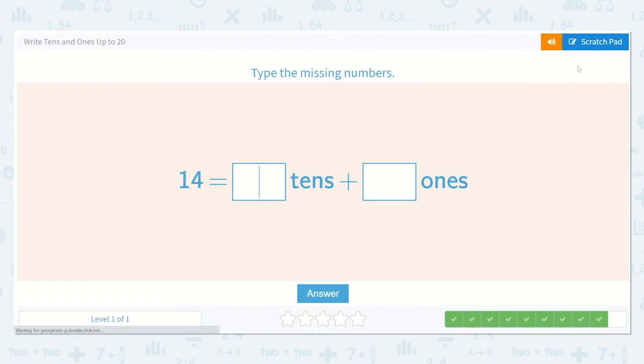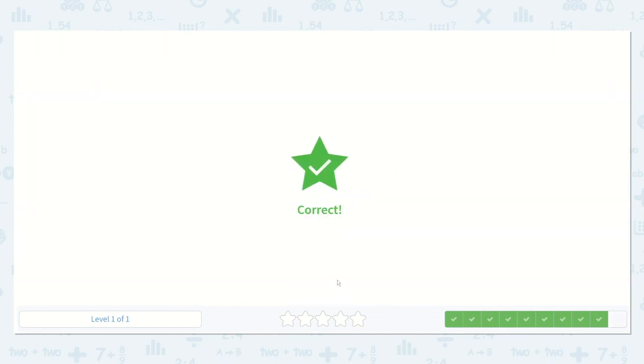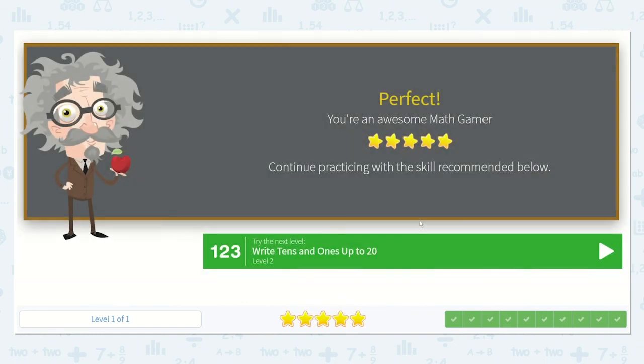Here is our last problem. We can do this one without having to draw any pictures. Can you point to where the tens place is on this number? Yes, right here. This is our tens place and this is our ones place. So we can see that there is just 1 ten and 4 ones. Brilliant job. 1 ten, 4 ones. So 14 equals 1 ten plus 4 ones. Thank you for all your help today.